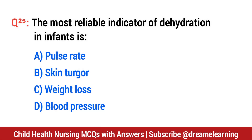Question number 25. The most reliable indicator of dehydration in an infant is? The right option is C: weight loss.